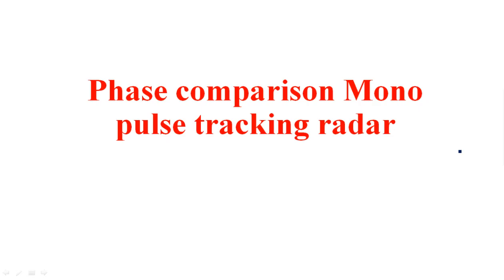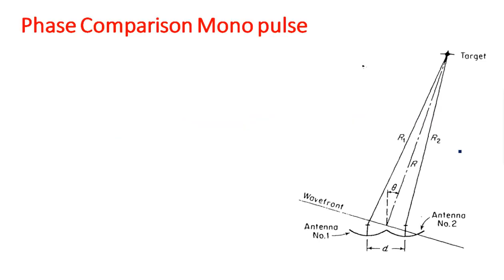In this video I am going to explain about phase comparison monopulse tracking radar. In the concept of monopulse tracking radar, this is the second type. The first type is amplitude comparison monopulse tracking radar. Another type of monopulse tracking radar uses a single pulse from two different antennas by comparing the phases of the received signals — this is phase comparison monopulse tracking radar.